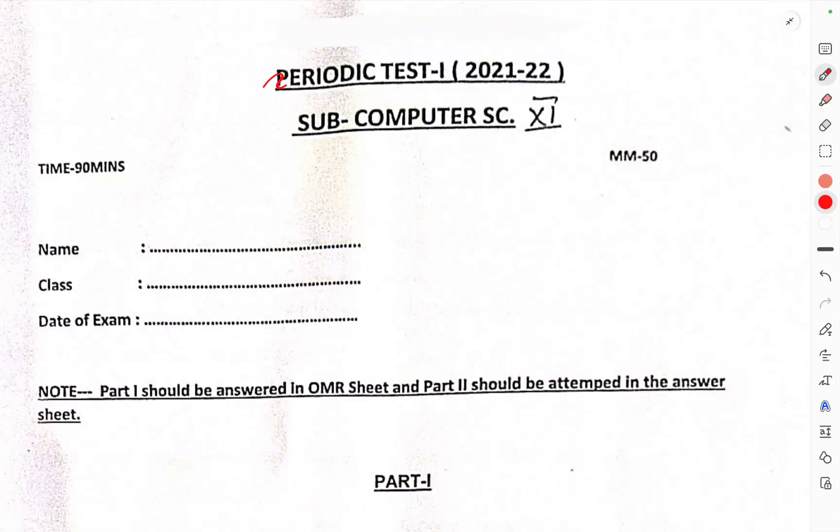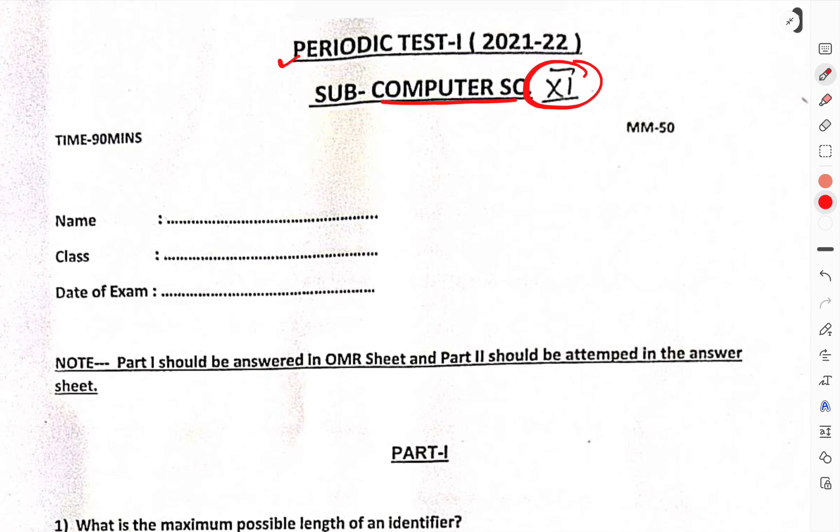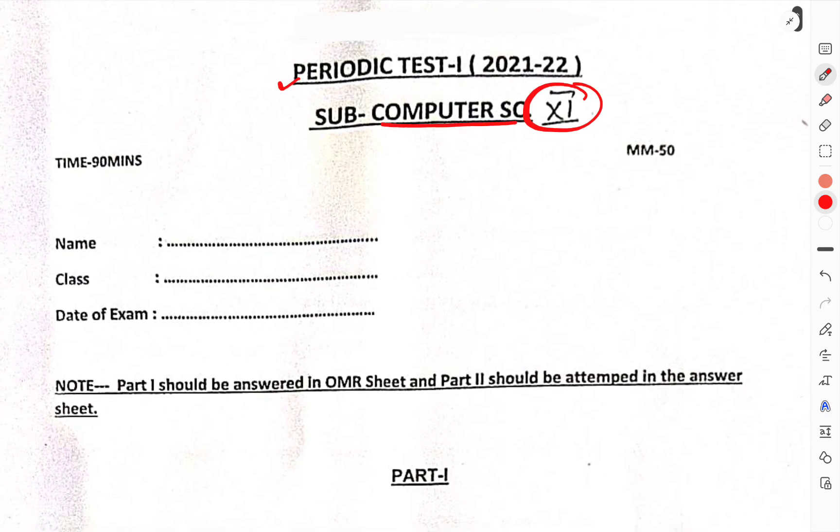Today we have to discuss the periodic test 1, class 11th, subject computer science. Time is 90 minutes, maximum marks 50. We have to just discuss the questions only. So let us start now.